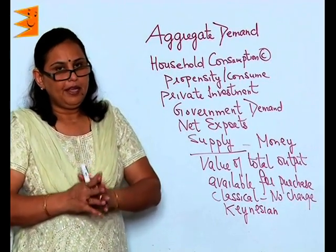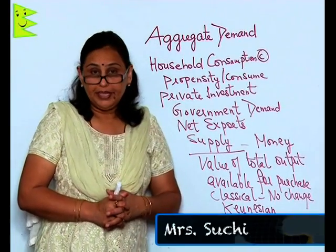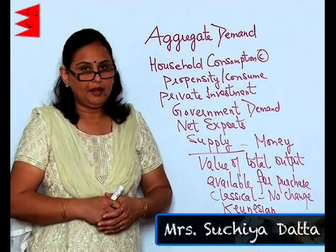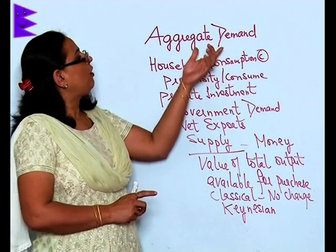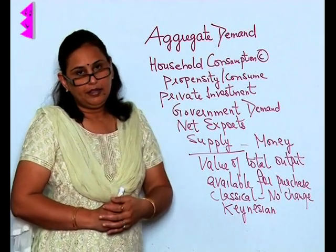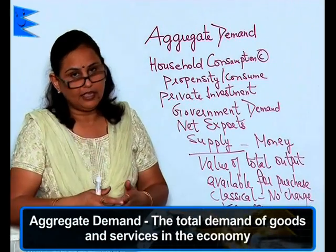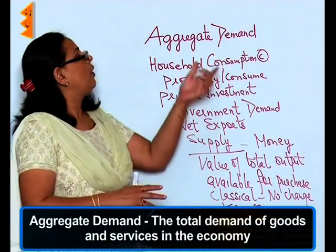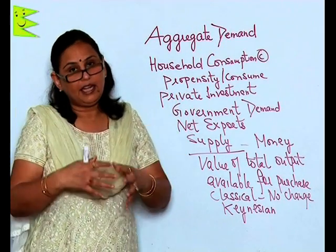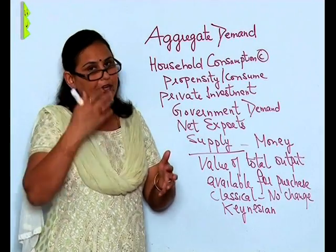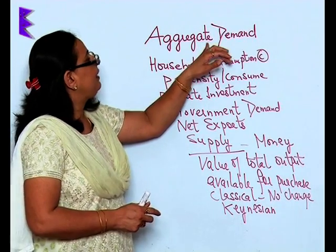While we are determining the income, we have to understand that the two basic pillars are the aggregate demand and the aggregate supply. When we talk of aggregate demand, this means the total demand of goods and services in the economy — that is, whatever is required by all the individuals in the economy is called aggregate demand.